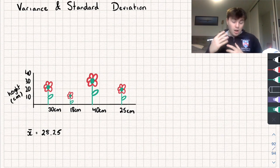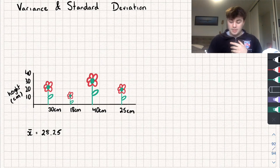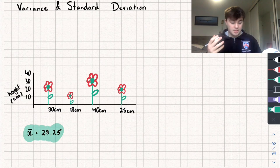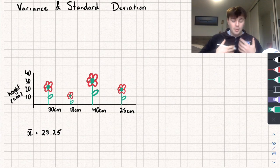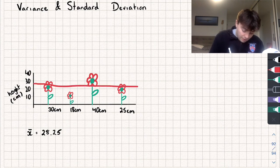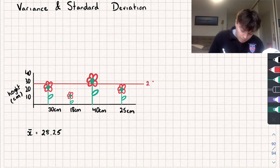We've got the height of four different plants: 30, 18, 40, and 25 centimeters. Of these we have a mean value — this x-bar here — of 28.25 centimeters. So if we added up all of their heights and divided by four we would get 28.25, and if I were to draw on this mean value it would be about here.